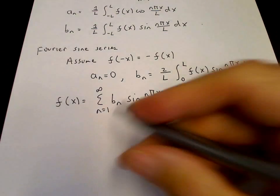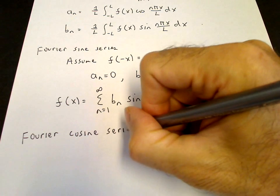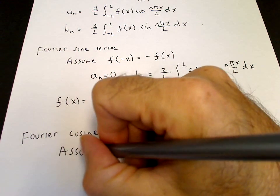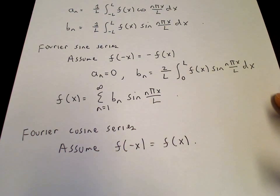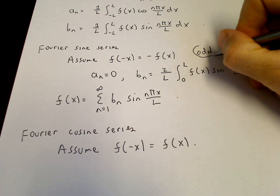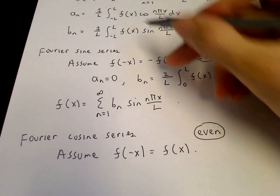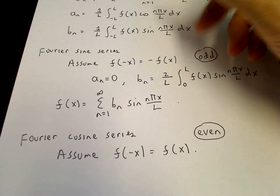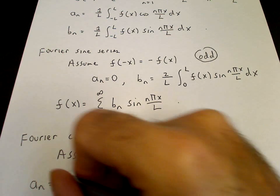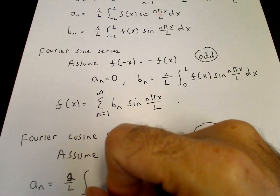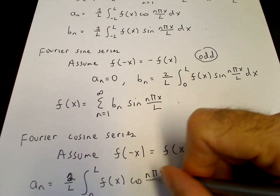For an even function, it's a similar story — this is the Fourier cosine series. We assume f is an even function, so f(-x) equals f(x). Then a_n is an integral of an even function times an even function, which is even. So a_n equals (2/l) times the integral from 0 to l of f(x) cosine(nπx/l) dx.